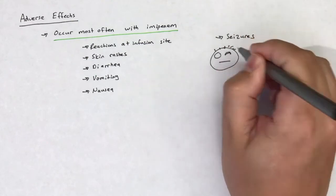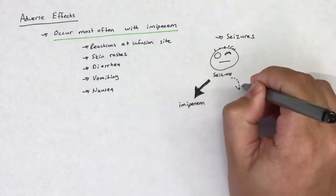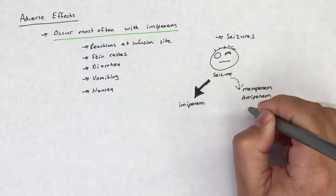Renal failure can cause high levels of imipenem, which can result in seizures. Meropenem, doripenem, and ertapenem are much less likely to cause seizures.